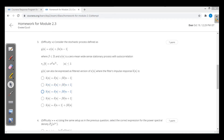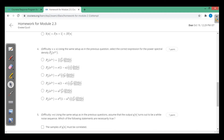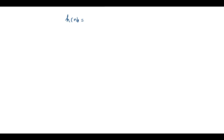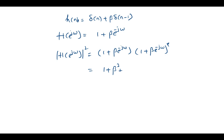Using the same setup as the previous question, we now find the power spectral density of y(n). Given the impulse response h(n) = δ(n) + β·δ(n−1), apply the discrete-time Fourier transform: H(e^jω) = 1 + β·e^(−jω). Then |H(e^jω)|² = (1 + β·e^(−jω))(1 + β·e^(jω)) = 1 + β² + 2β·cos(ω).